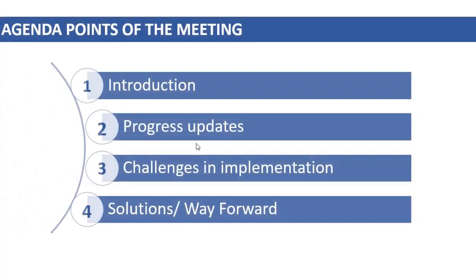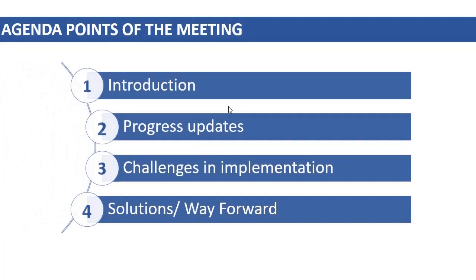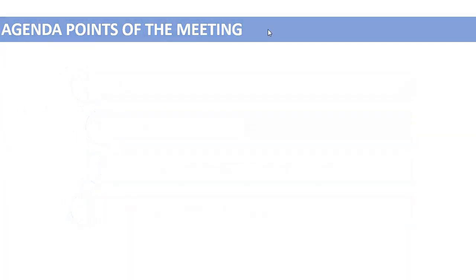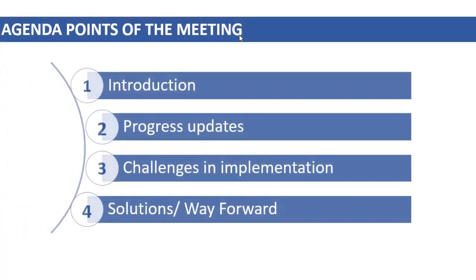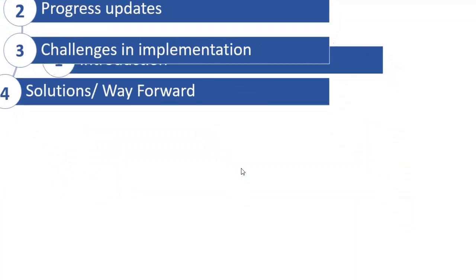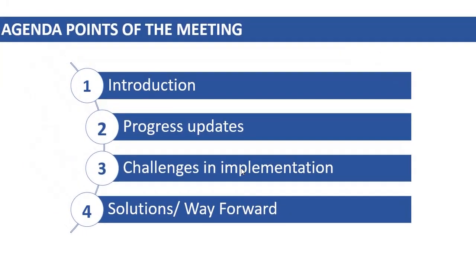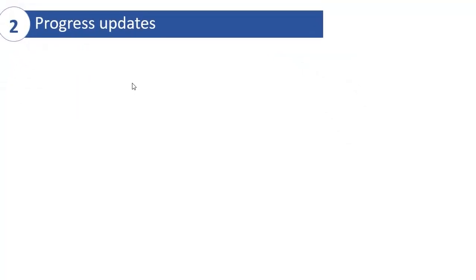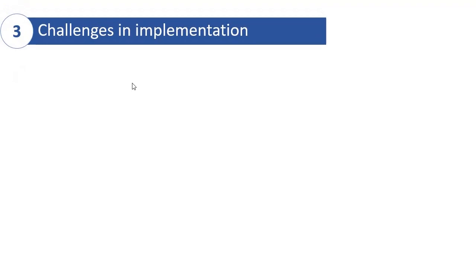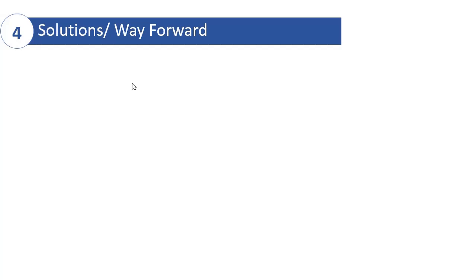For example, you want an animation like this where you can see the colors are also changing. In the first one the color is like this, and then you see it's changing to dark blue. First you introduce the whole agenda, then you start with the first topic — the introduction one. Then in the next one you see the next agenda point coming, then the third one, then the next agenda point. For such type of animations we do a lot of work, but it's very simple.